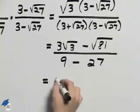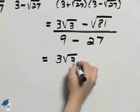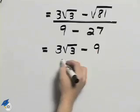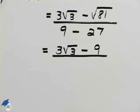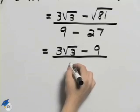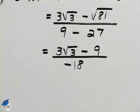We can simplify this a little bit further. The square root of 81 we know is 9. 9 minus 27 is negative 18.